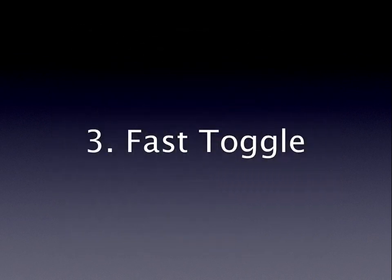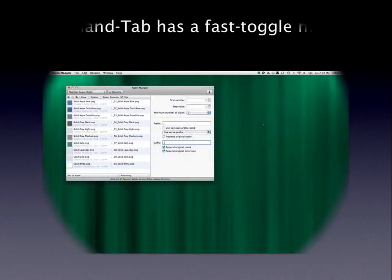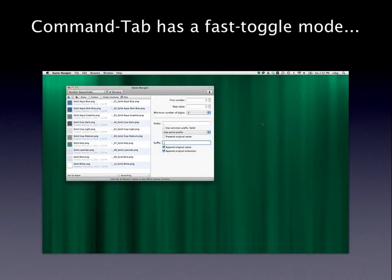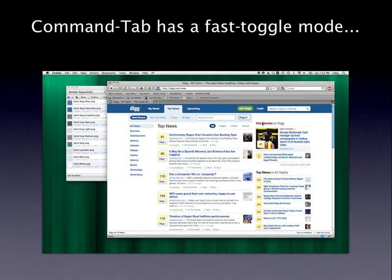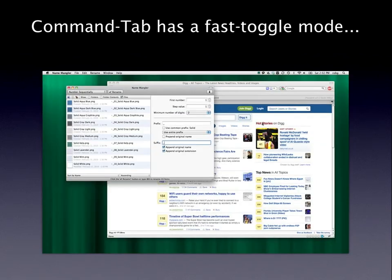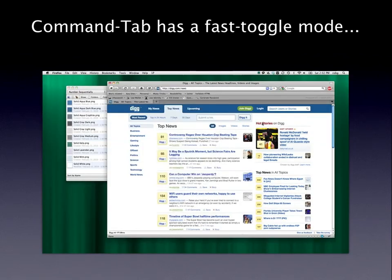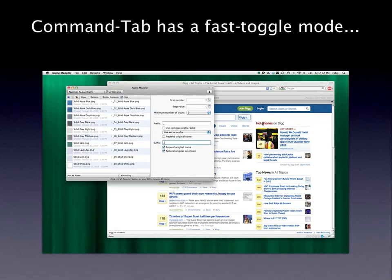The third thing about WITCH is that you can use it to do fast toggling. The easiest way to demonstrate it is to show first what it looks like in Command-Tab, which is the application switcher in OS X. If you press Command-Tab, the switcher pops up and you can switch between Program 1 and Program 2. But if you press and release it quickly, you can toggle between those programs without the switcher actually showing up on screen. That's what I call fast toggle.